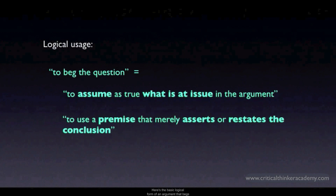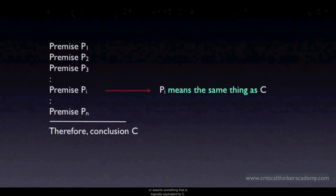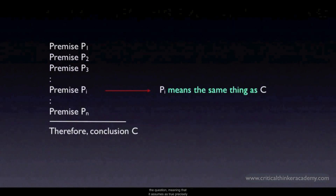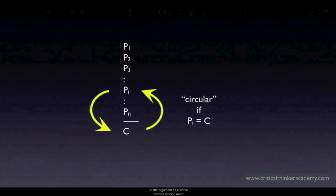Another way to put this is that the argument contains a premise that in some way asserts or presumes to be true what is being asserted in the conclusion. Here's the basic logical form: you have premises p1, p2, and so on down to pn, and one of them means the same thing as the conclusion C, or asserts something logically equivalent to C. If this happens, then this premise begs the question — it assumes as true precisely what is at issue, namely whether conclusion C is true. We call this circular because the conclusion is supposed to draw logical support from the premise, but the premise simply restates the conclusion.